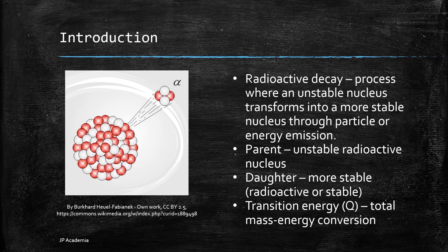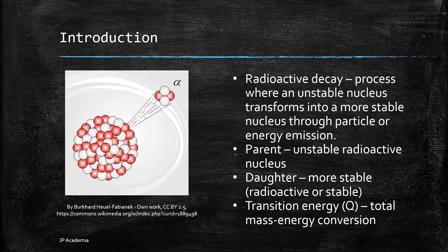Radioactive decay is the process where an unstable nucleus transforms to a more stable nucleus through particle or energy emission. The parent refers to the unstable radioactive nucleus and the daughter refers to the more stable nucleus that can be radioactive or stable. The transition energy Q refers to the total mass energy conversion of the decay process.